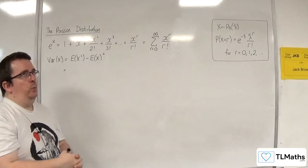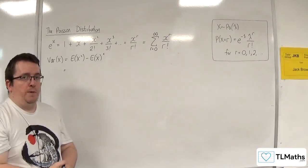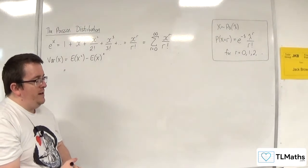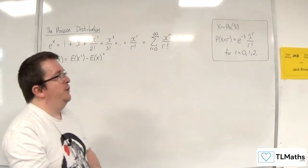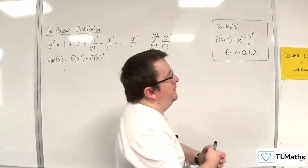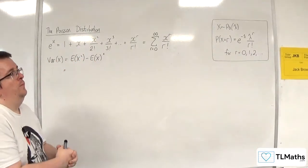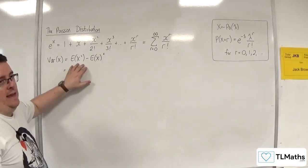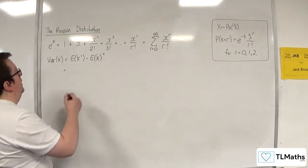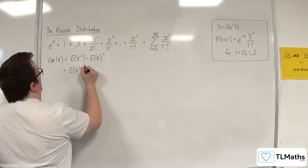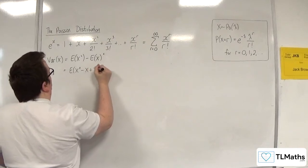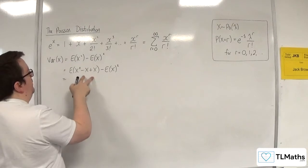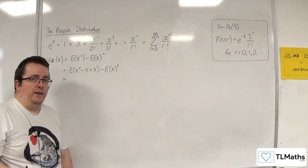As we did with the binomial distribution extension video, we recognise that the formula for the Poisson distribution has a factorial in it. So it seems reasonable to once again write E of X squared as E of X squared, take away X, plus X. There's absolutely nothing wrong with doing that, because I'm just taking away X and adding X back — that's perfectly fine.